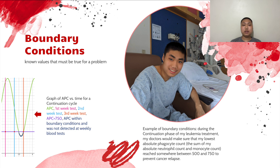Blood cancer patients usually have to have certain blood counts suppressed to boundary conditions. Since outpatients only have weekly blood tests, doctors cannot determine if outpatients have reached their boundary conditions between tests, leading to the administration of more chemo until the blood cell counts reach the desired boundary conditions at weekly tests.